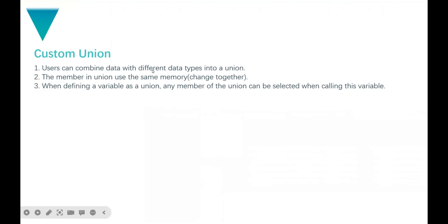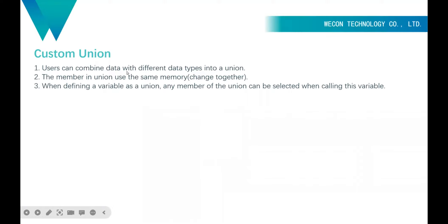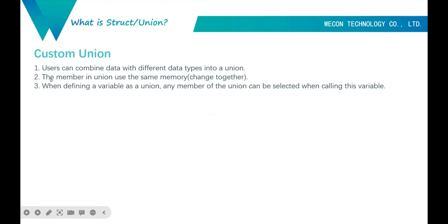Next is custom union. Users can combine data with different data types into a union. The members in a union share the same memory, which means they will change together. For example, if we put A and B into a union, and define A as int and B as bool, since A and B are in the same union and share the same memory.